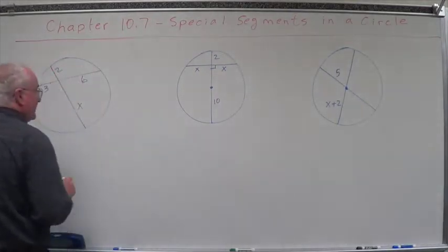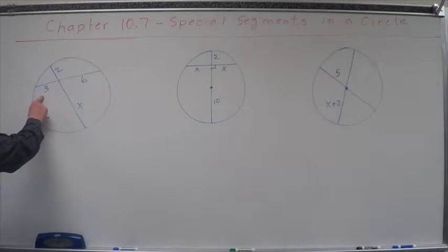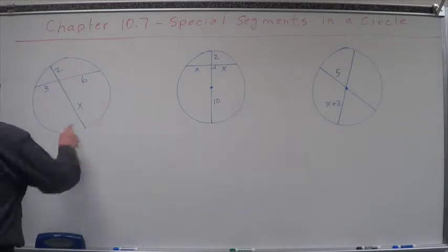Let's do this. The intersecting secant theorem says this portion times this portion equals this portion times this portion.